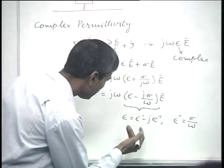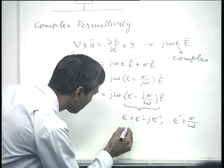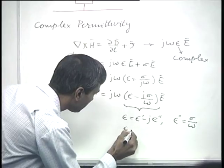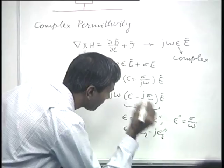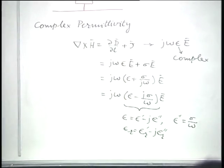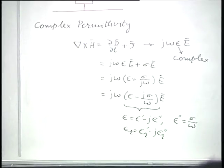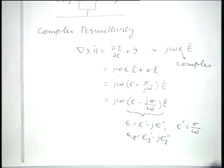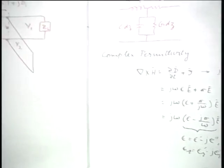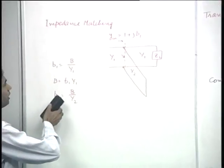One could also write εr = εr' − j·εr'', where each quantity is divided by the free-space permittivity ε₀. Having introduced these concepts, we can now go on to the actual calculation of the transmission line parameters.